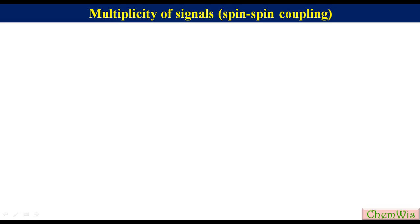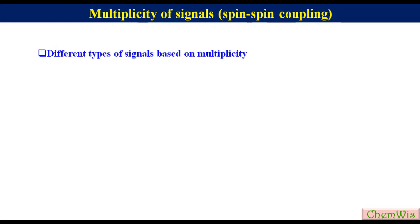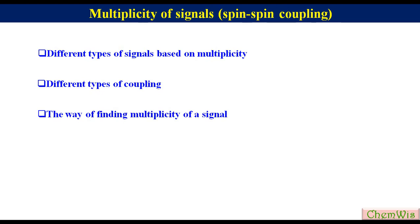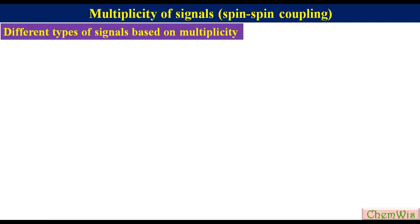Hello friends. In continuation to the Proton NMR lecture, today we are going to discuss the third point, which is multiplicity of the signals, also called spin-spin coupling. In this lecture, we will cover the following points: different types of signals based on multiplicity, different types of coupling, the way of finding multiplicity of a signal, Pascal triangle, and coupling constant.